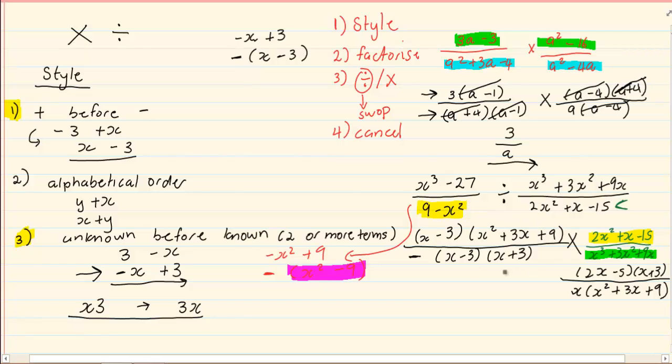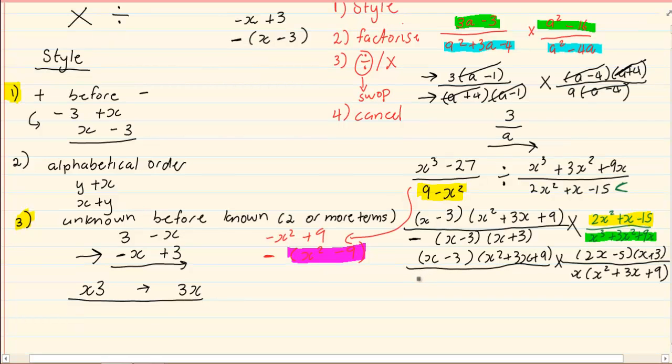And we still have to rewrite our first expression which is x minus 3 into x squared plus 3x plus 9 times and then over negative x minus 3 x plus 3.